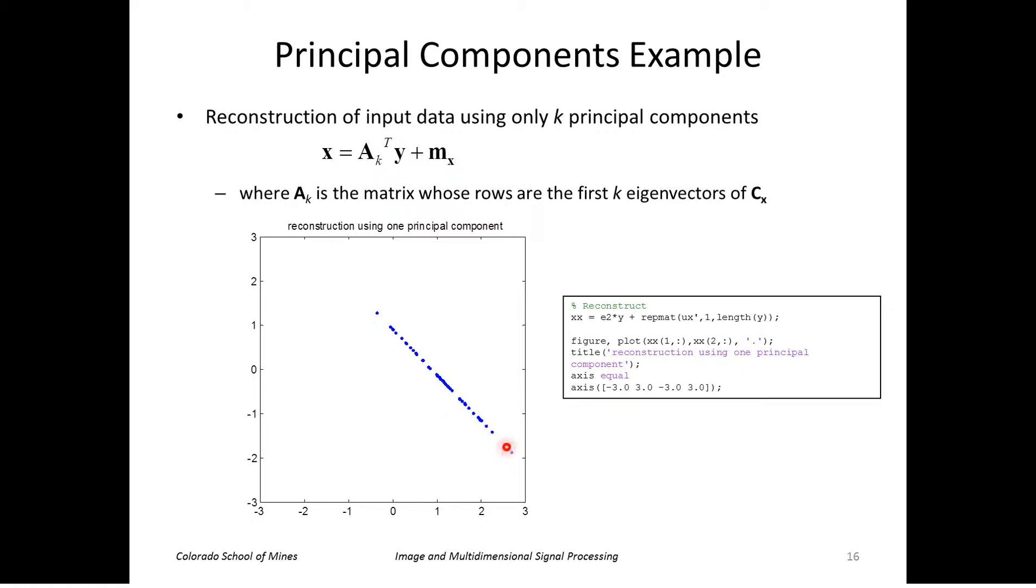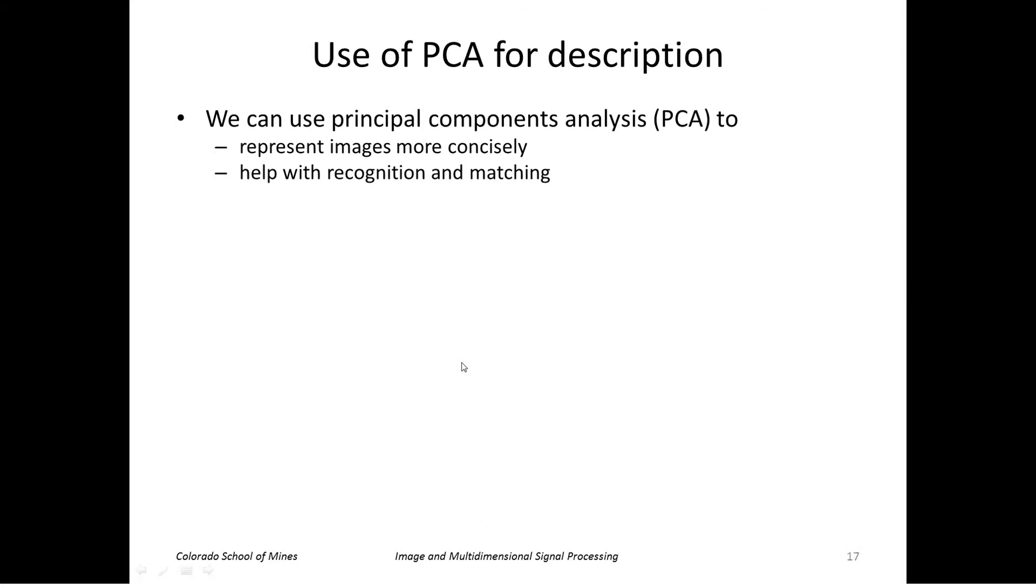I just get an approximated version of that. Recall that the original population of x was kind of elongated in this direction. So I've done the best I could here because I've kept the direction, the dimension that has most variation, and I've basically just approximated out or approximated away the dimension with the least variation.